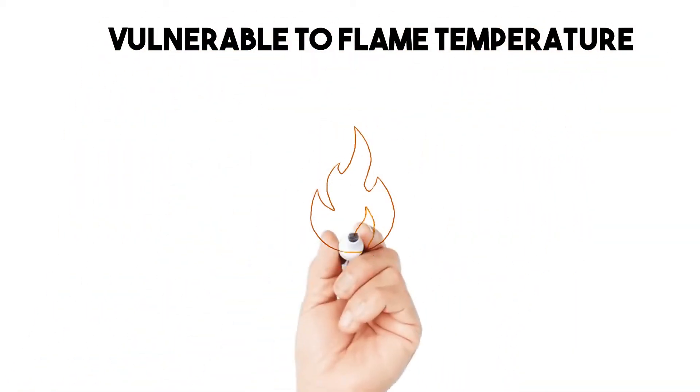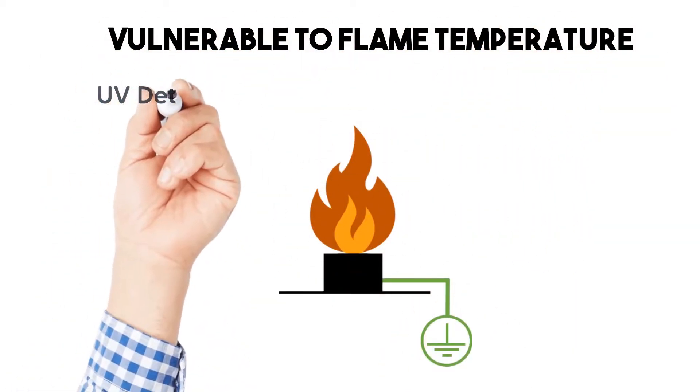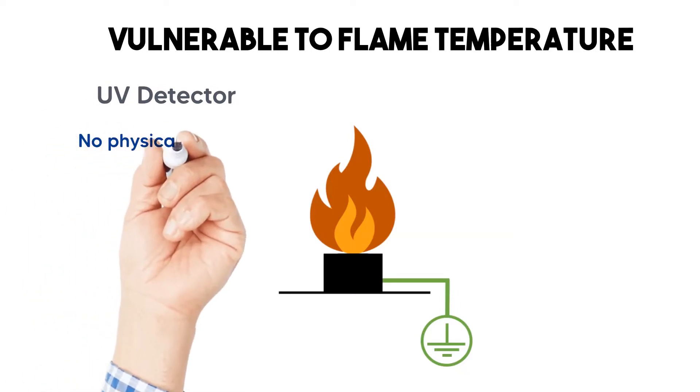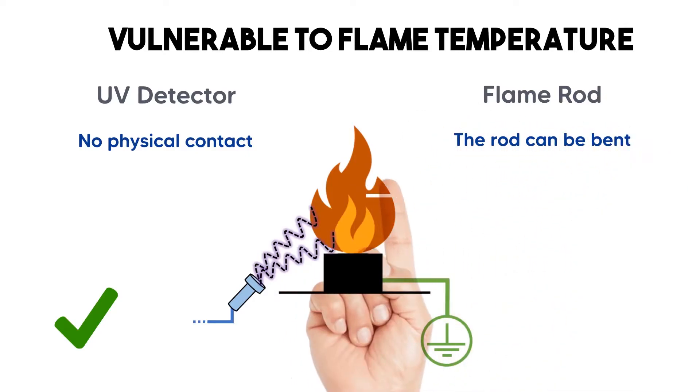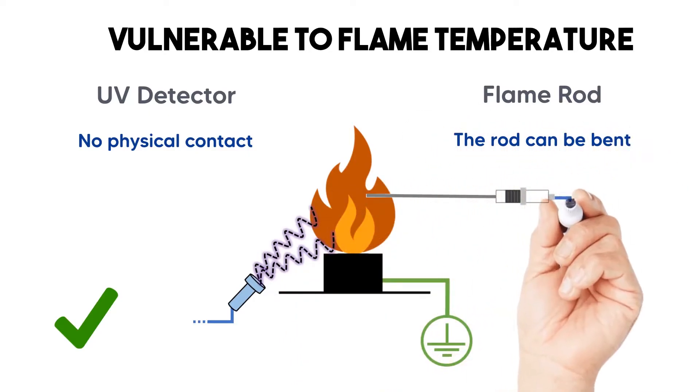Vulnerable to flame temperature. The UV detector is not affected since there is no physical contact. At very high temperatures the rod can bend losing detection ability.